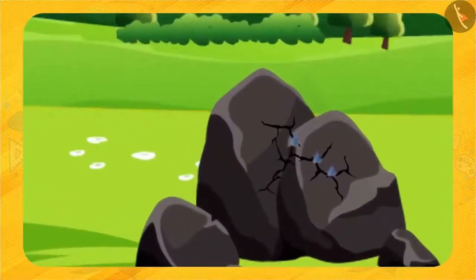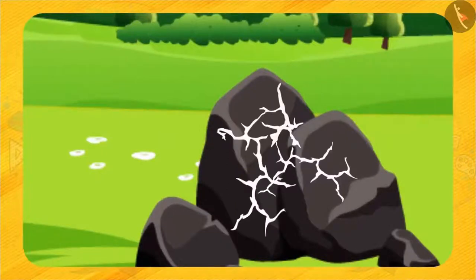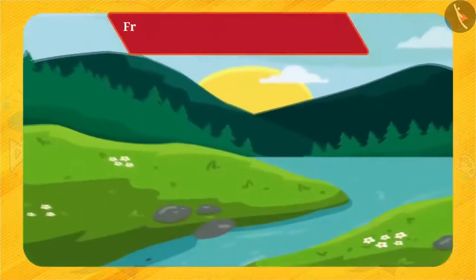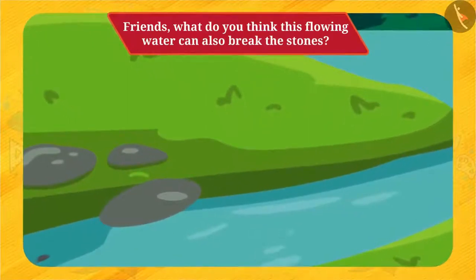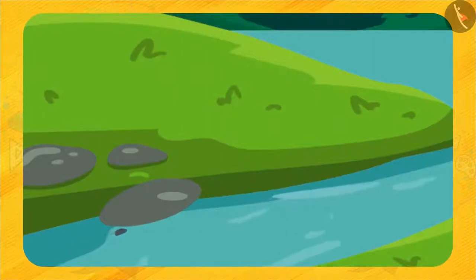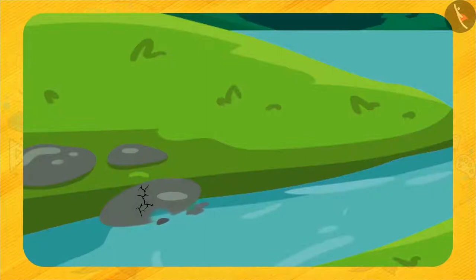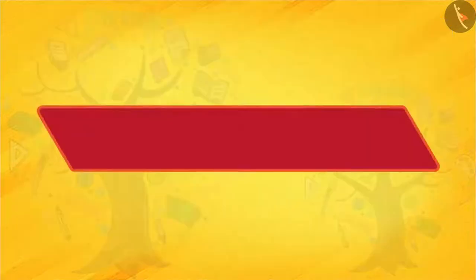Many times, water gets filled in these cracks, and sometimes due to low temperature, it turns into ice, which makes the crack bigger, and finally the stones break. Running water also carries small stones with it, and when these stones collide with other big stones, they break them, and the water then takes these particles along with it and deposits them further down its path. Like water, air also blows small particles and drops them somewhere else, resulting in the formation of soil.